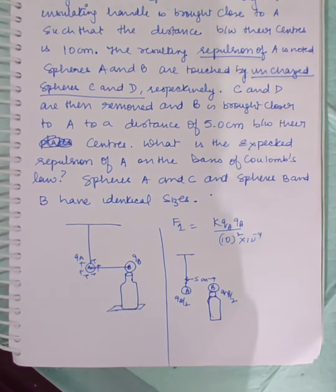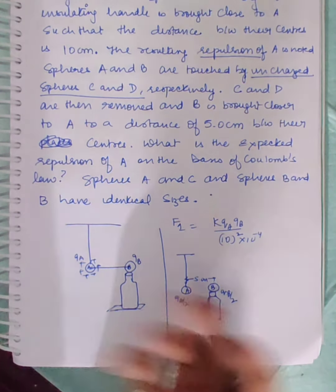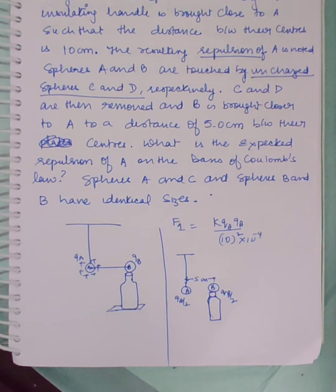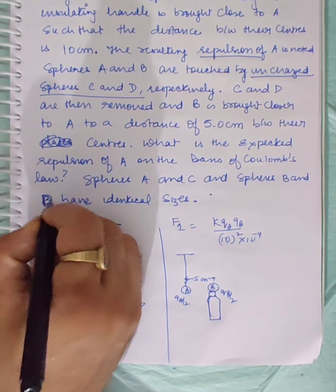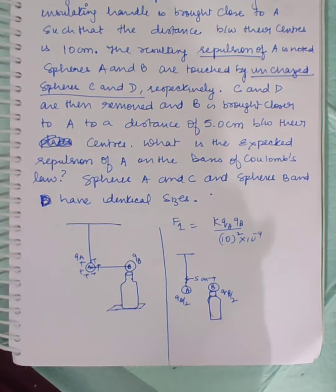What is the expected repulsion of A on the basis of Coulomb's law? Given that spheres A and C, and spheres B and D, have identical sizes.